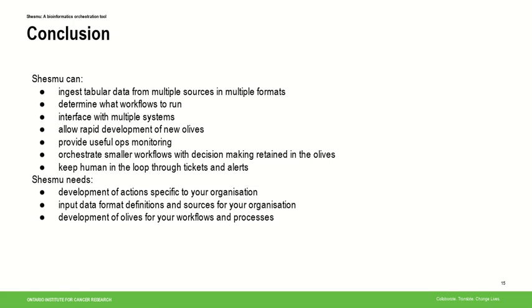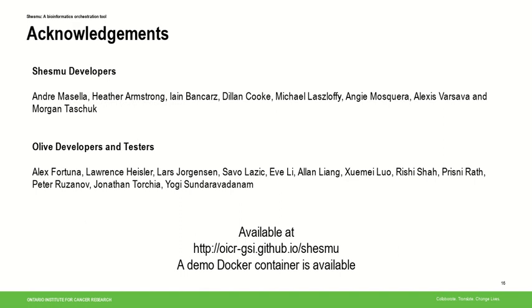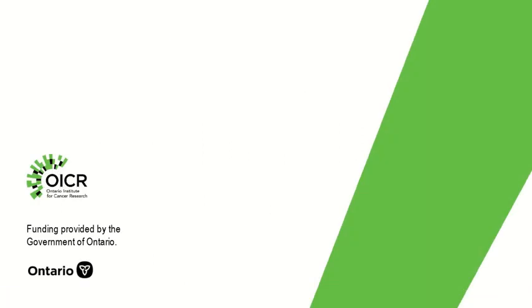Shasmut supports your operations group with a lot of monitoring on data. If you're developing workflows where many small workflows need to be strung together, the Olive language provides a great way to apply decision-making to connect those steps, and the system allows you to pull humans into the loop where necessary through tickets and alerts. Getting it off the ground requires development of actions specific to your organization, input data formats and acquisition methods, and OLIVs specific to your institute. We've had a team of Shasmut developers and many testers from our institute developing and testing Shasmut through the development of our workflows. Thank you very much.